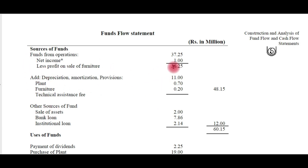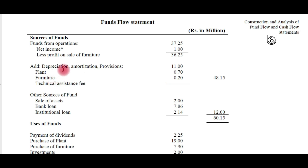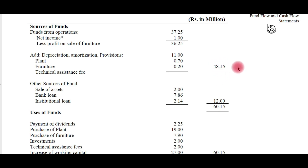From this we will see the fund flow statement. Under sources of funds: net income is 37.25 million rupees, representing total sales revenue. We add back depreciation, amortization, and provisions because these are non-cash expenses. For the profit and loss account we removed depreciation to arrive at net profit, but to find actual funds generated from operations we add it back. Adding back these depreciation amounts to 36.25 gives us 48.15 as total funds generated from business operations.